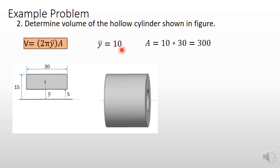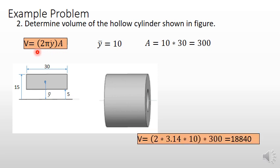The area of this rectangle is simply 30 multiplied by the thickness. The thickness is 10, so 10 × 30 gives 300. Now that you have the area and ȳ, put these two values into the equation so that you can get the volume of this hollow cylinder.